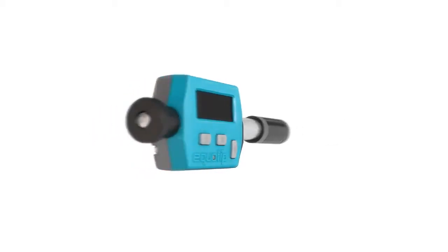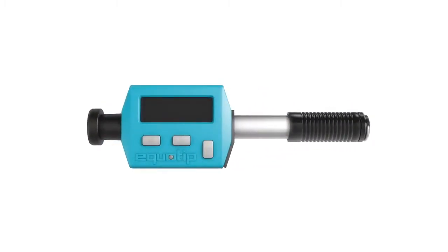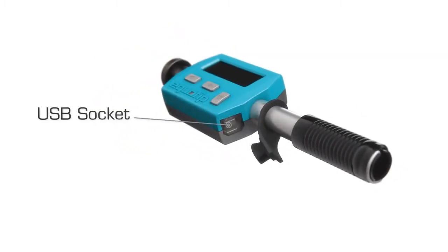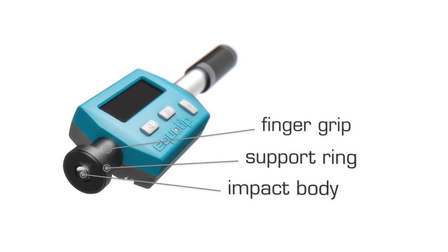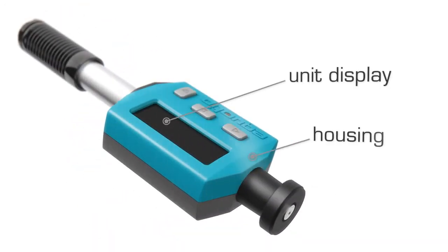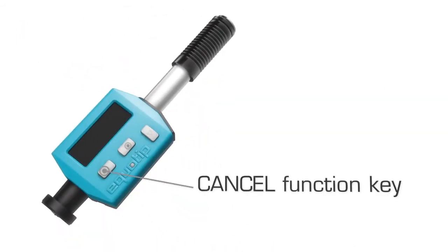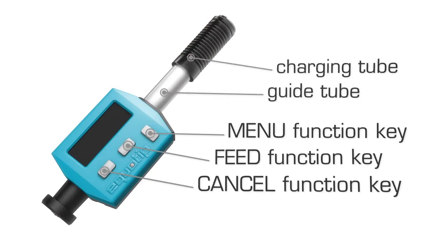These are the different parts and functions of the instrument. The USB socket, the USB cover, the impact body, the support ring, the finger grip, the unit display, the housing, cancel function key, feed function key, menu function key, guide tube and charging tube.